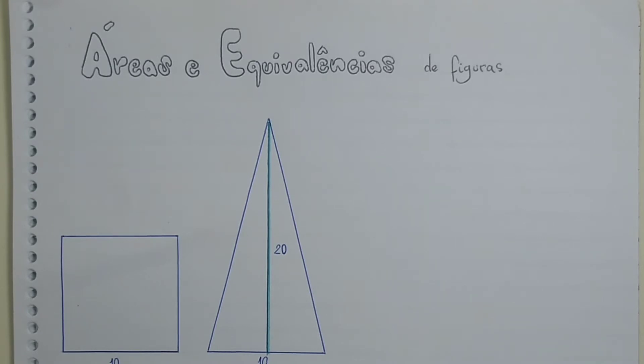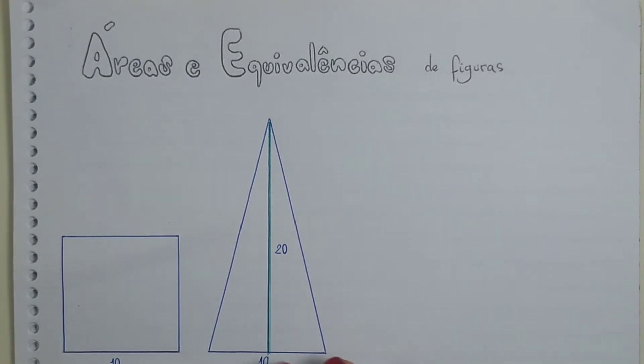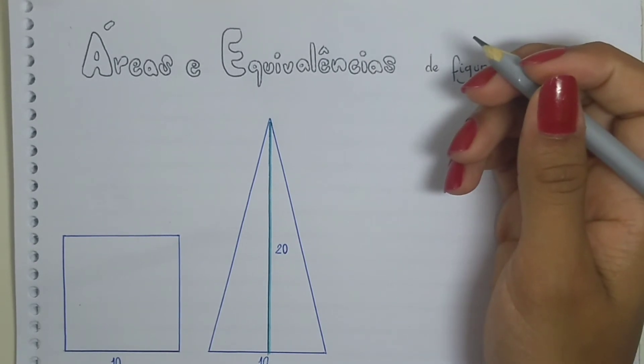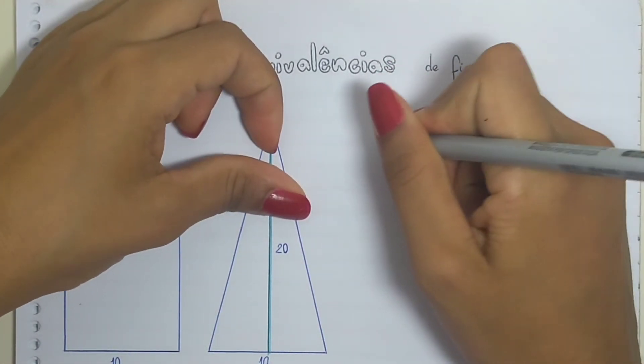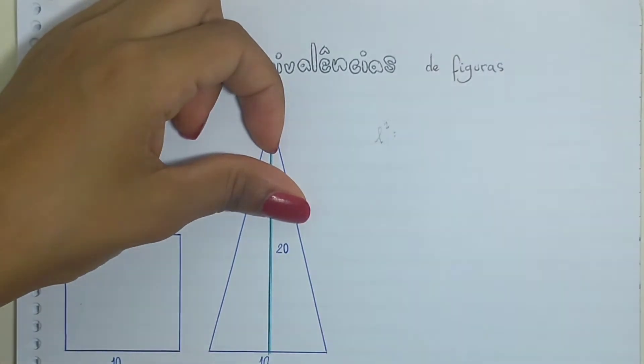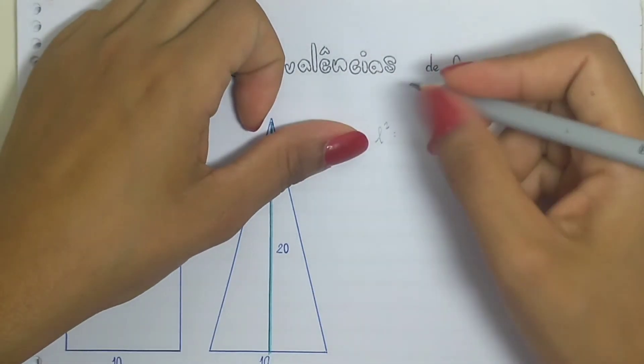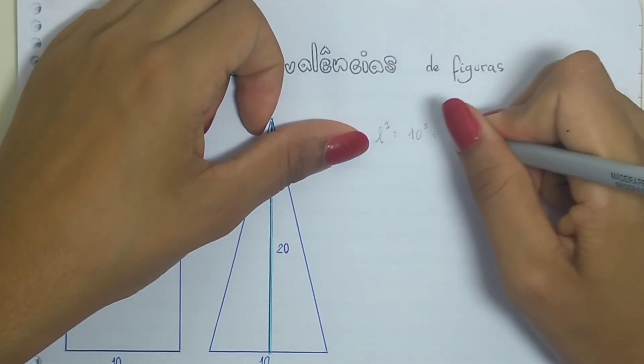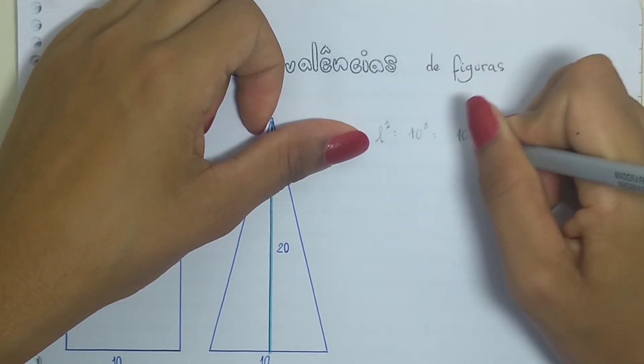So, these two figures have the same area and, for this reason, they are called equivalences, or of equal value. Let's see here. What is the formula of the square? L². Or, like, we have that L is 10, so 10², we have that area of this square is 100.